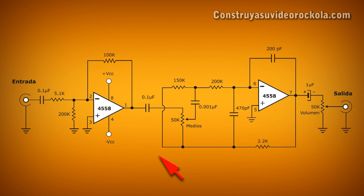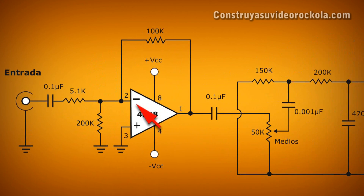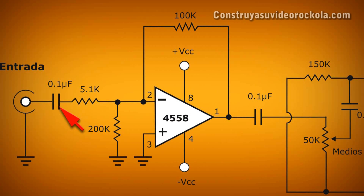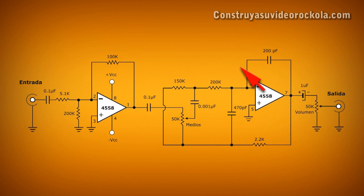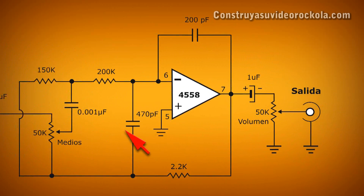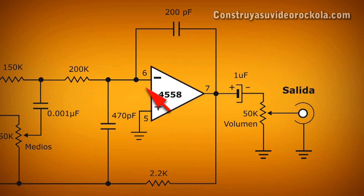The circuit uses a 4558 IC, which is a dual operational amplifier. Before entering the signal to the first operational amplifier, low frequencies are restricted through a 0.1 µF capacitor. The operational amplifier amplifies the signal, which is then received through another 0.1 µF capacitor that restricts the passage of low frequencies again. The second stage enhances the mid-range and restricts high frequencies using 470 pF and 200 pF capacitors.